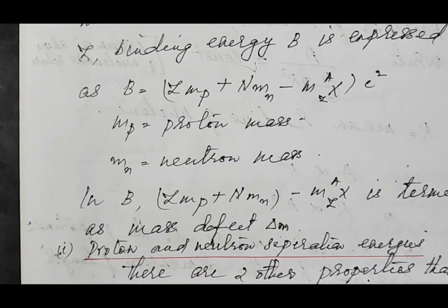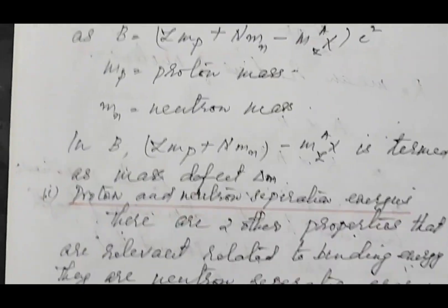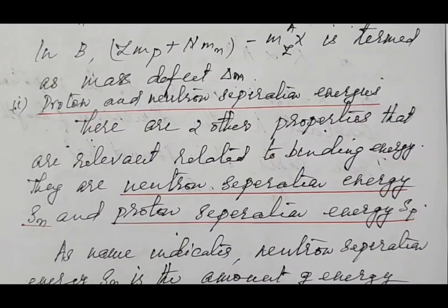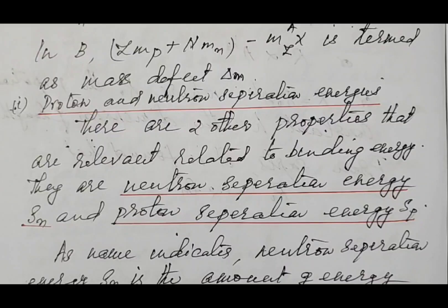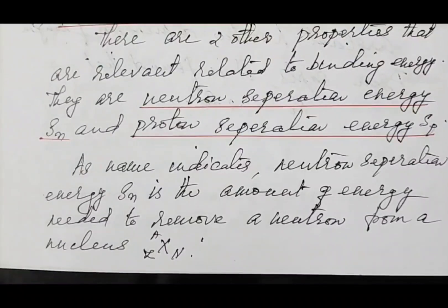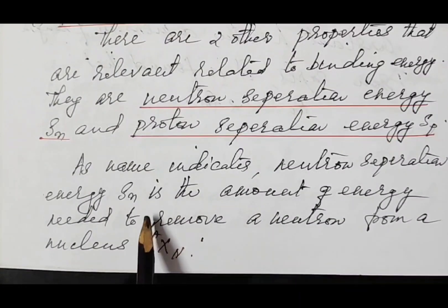Next, we will move on to two other properties that are very important and related to binding energy: proton separation energy and neutron separation energy. The name itself indicates that proton separation energy is the energy needed to remove a proton from the nucleus, and neutron separation energy is the energy needed to remove a neutron from the nucleus. They are denoted by S_P and S_N respectively.